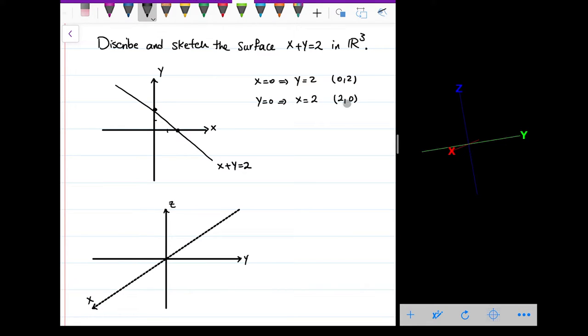So the points (0, 2) and (2, 0) are two points on my line. So let me find these two points. 2 and 0. So (2, 0) is here.